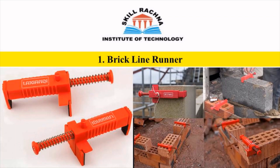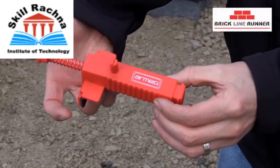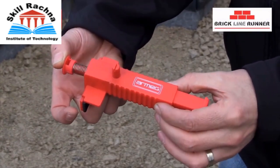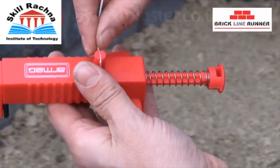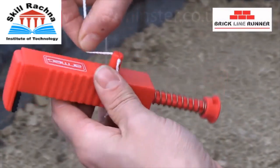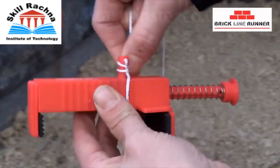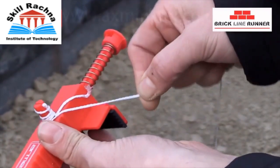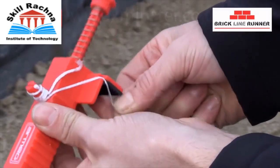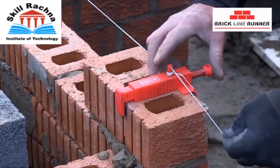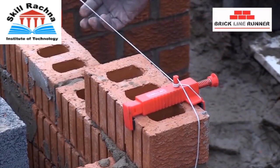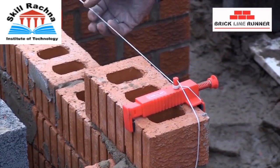The first tool we have is the brick line learner. Basically, it is a very simple tool. We are able to adjust it as per the size of the brick. We have a nylon rope which we need to tie down, and there is a provision for making it exactly lock. We are able to put it on any kind of brick and adjust it.